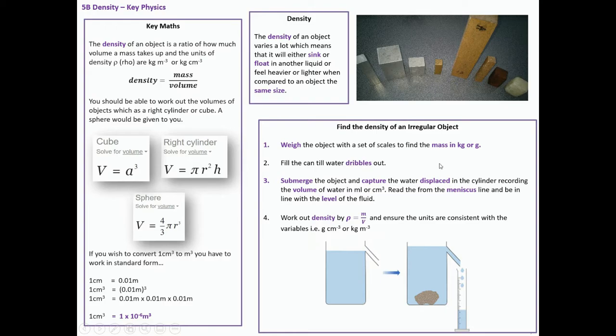There is a requirement that you should understand how to find the density of an irregular object, which is very similar to a regular one. I weigh the object with a set of scales in mass in kilograms or grams. Then I fill the can, the water dribbles out. This is a Eureka can, often called, or a density can.